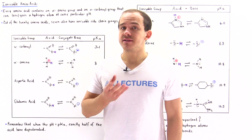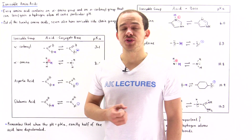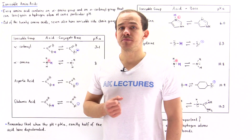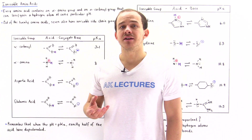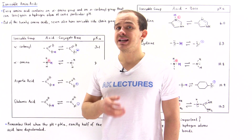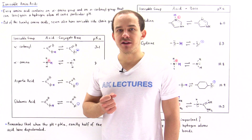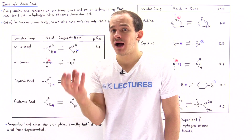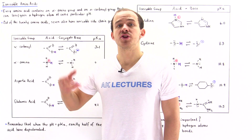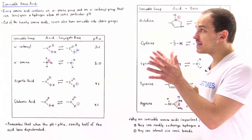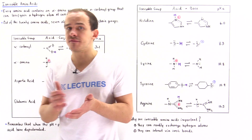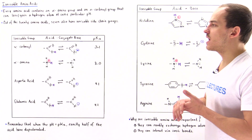Seven of the 20 amino acids that exist inside our body have sidechain groups that are readily ionizable. At certain pH values, these ionizable sidechain groups will be able to exchange hydrogen atoms. They can donate and accept hydrogen atoms, giving them the ability not only to participate in acid-base reactions, but to also form ionic bonds. Because if the sidechain groups can form ions, those charges can participate in forming ionic bonds with other macromolecules. That's what makes these seven amino acids reactive and gives them the ability to participate in a variety of different types of biological reactions inside our body.